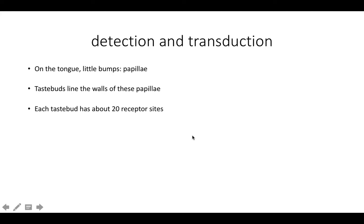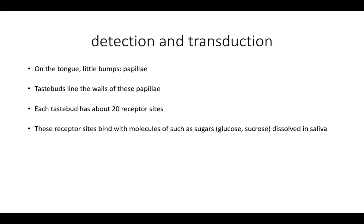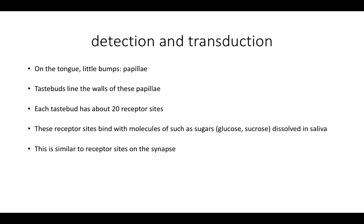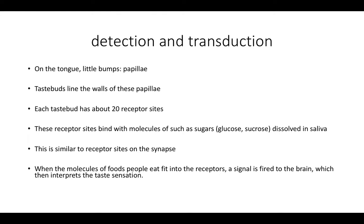Each taste bud has about 20 receptor sites for molecules. These receptor sites bind with molecules of food, such as sugars like glucose and sucrose, dissolved in saliva. That binding of the molecule is similar to what we saw in the second unit, when neurotransmitters bind to receptor sites on the synapse. When the molecules of foods fit into the receptors, the signal is fired into the brain, which then interprets the taste sensation. That is detection and transduction.